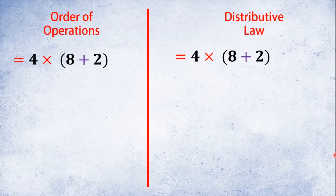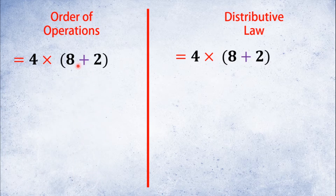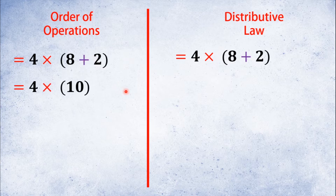Now we must add this — Order of Operations. We have groups, exponents, multiplication and division, and then additions and subtractions. If we look at the groups, we have brackets. So we have 4 times 10 — if we complete the group, we don't have parentheses, we have brackets. So we have 4×10.